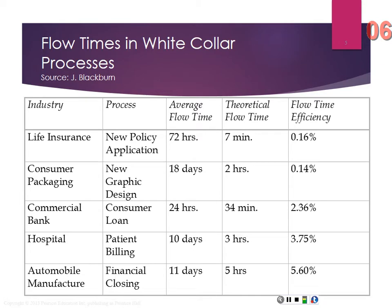Tying back to the last chapter, we talk about flow time efficiency. In life insurance, the average flow time for a new policy application is 72 hours, but the theoretical flow time — the actual work — is seven minutes. That's less than 0.16% flow time efficiency. In consumer packaging, new graphic design has an average flow time of 18 days, theoretical flow time of two hours — again, less than 1%. Things are just hanging out waiting for somebody to get to them.